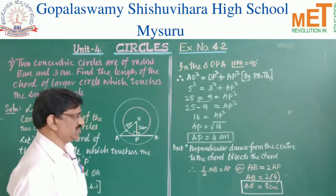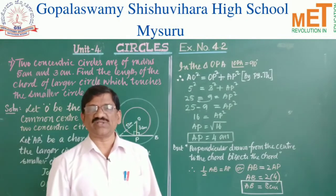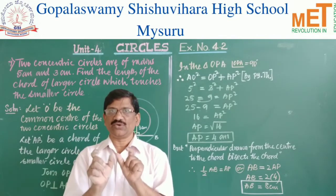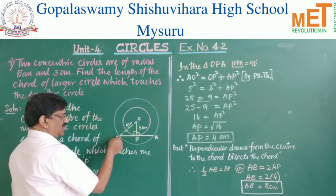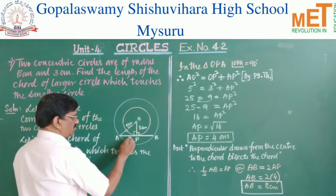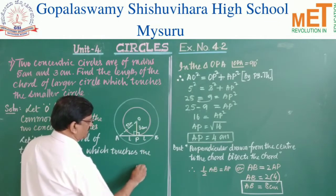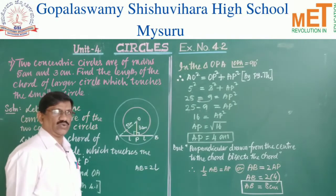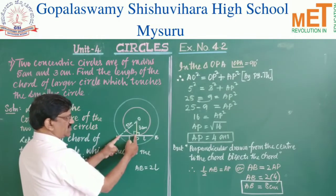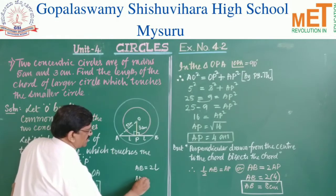The perpendicular drawn from the center to the chord bisects the chord — this is a property of circles you have already studied. Here OP is the perpendicular and AB is the chord, so OP divides AB into two equal halves. Therefore AP = PB = half of AB, and the length AP equals half of AB.